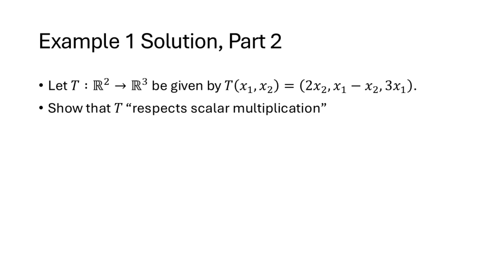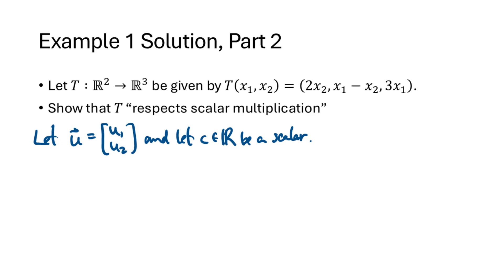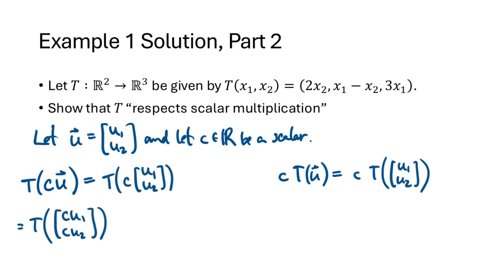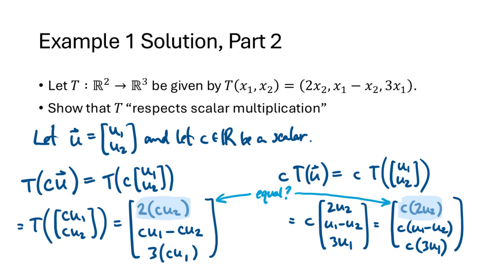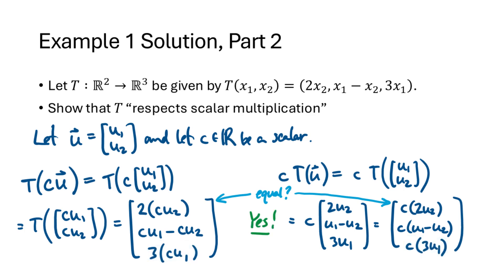For scalar multiplication, we need to show T(cu) = c·T(u) for any vector u and scalar c. Let u = (u1, u2) and let c be a scalar. On the left we do the scalar multiplication first and apply T; on the right we evaluate T first and then multiply by the scalar. Comparing entry by entry: 2(c·u2) = c·(2u2) since these are all scalars and we can rearrange multiplication. Similarly for the second and third entries. So T(cu) = c·T(u), and after showing both properties, T is indeed a linear transformation.